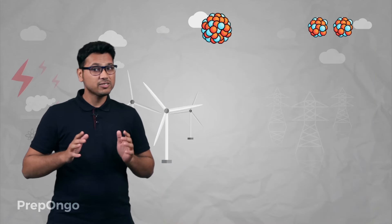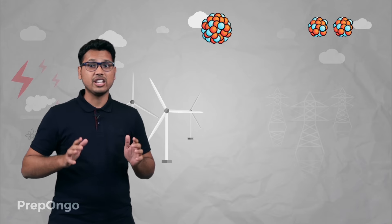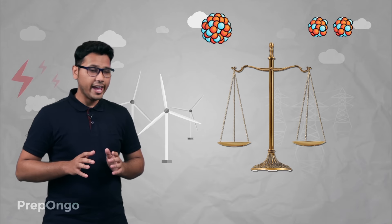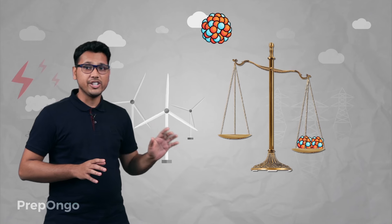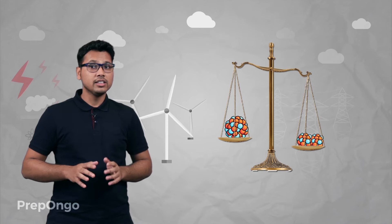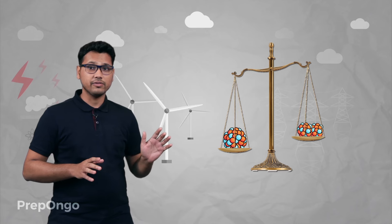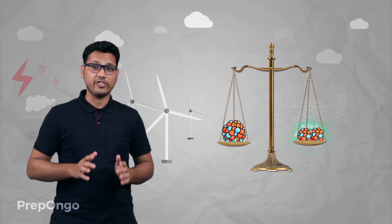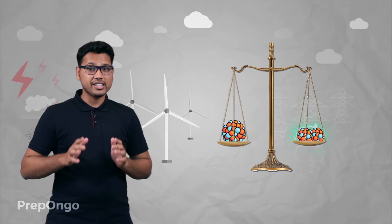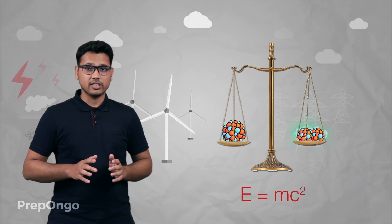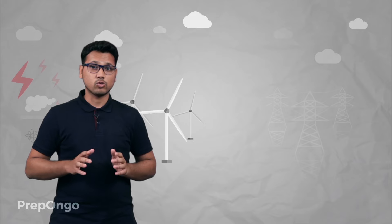Now in this process, where does this energy come from? If you weigh the two lighter nuclei, you will find that their weight will be a little smaller than the weight of this heavy nucleus. So we can say that the mass which is lost is converted into this huge amount of energy by using Einstein's mass-energy equivalence, E equals mc squared.